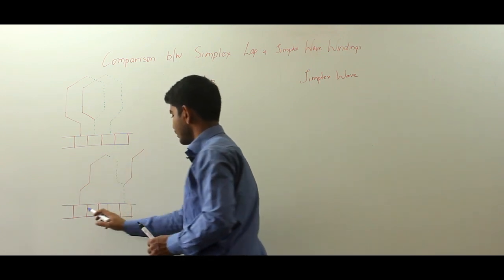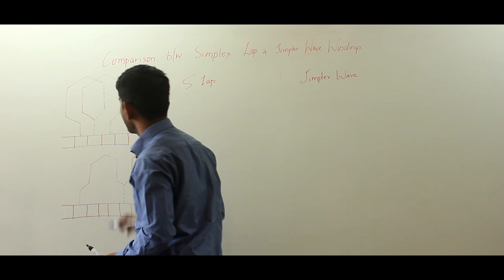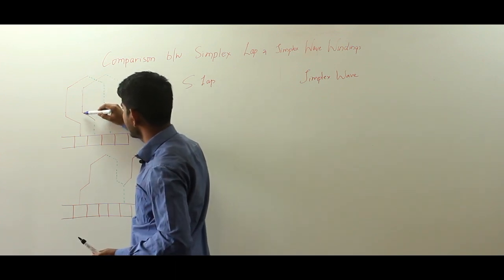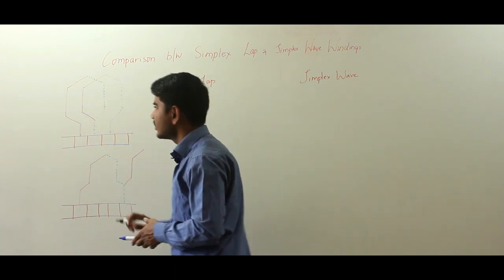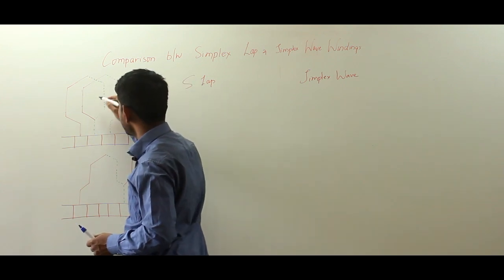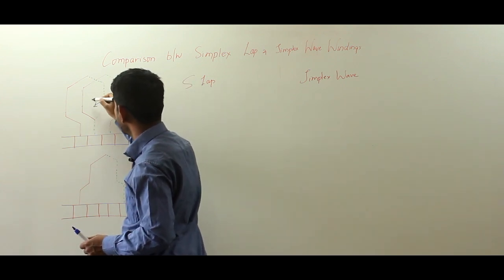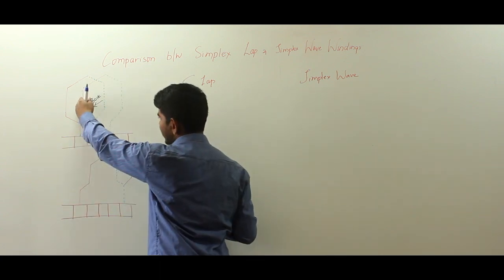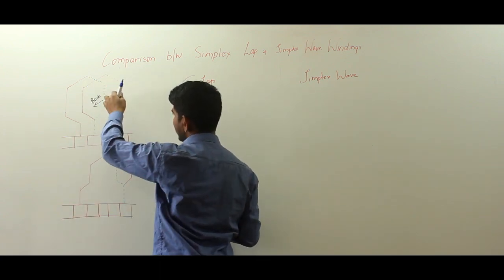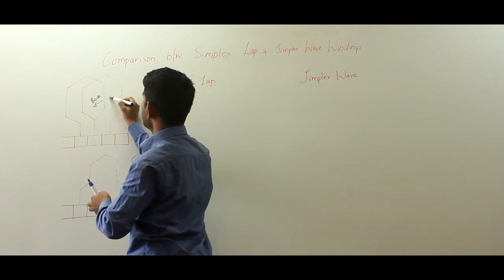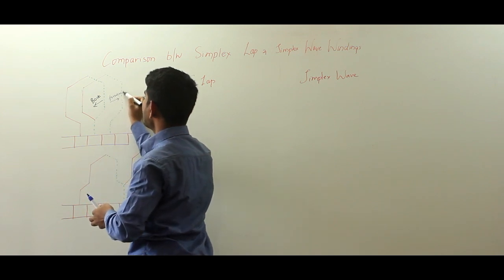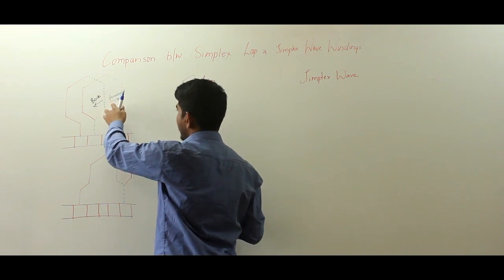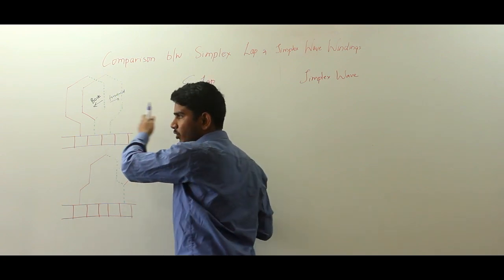These are the commutator segments. Here you can see the finishing side of the coil is connected to the starting side of the next coil, and this starting side of the coil is connected backward to the first coil. The starting side is connected backward and the finishing side is connected forward, so there is an alternate back and forward direction in this lap winding as the winding progresses forward.